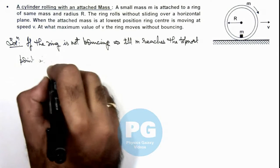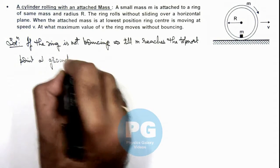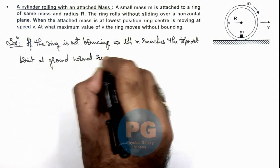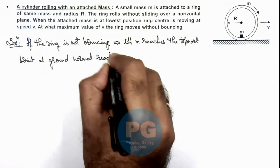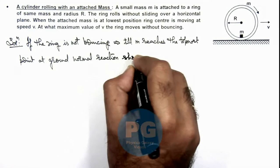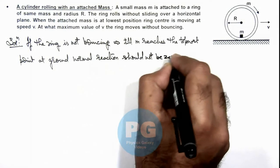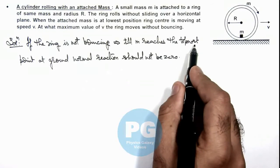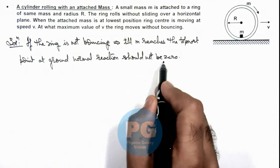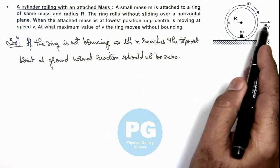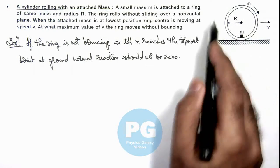At ground, when it reaches top most point, the normal reaction at the bottom should just be zero. That will be the speed at which it can move without bouncing.